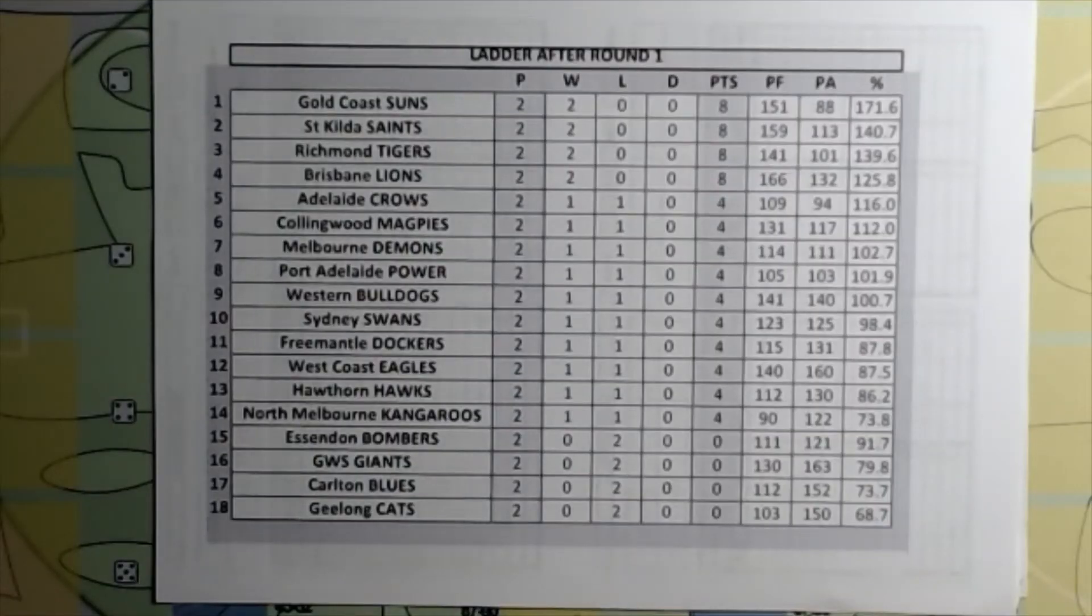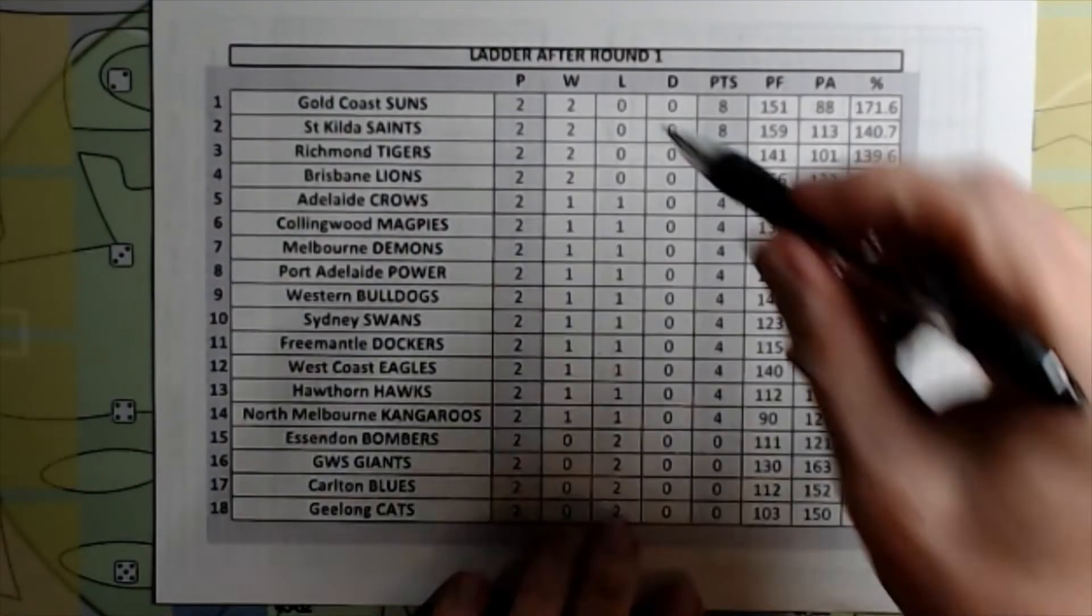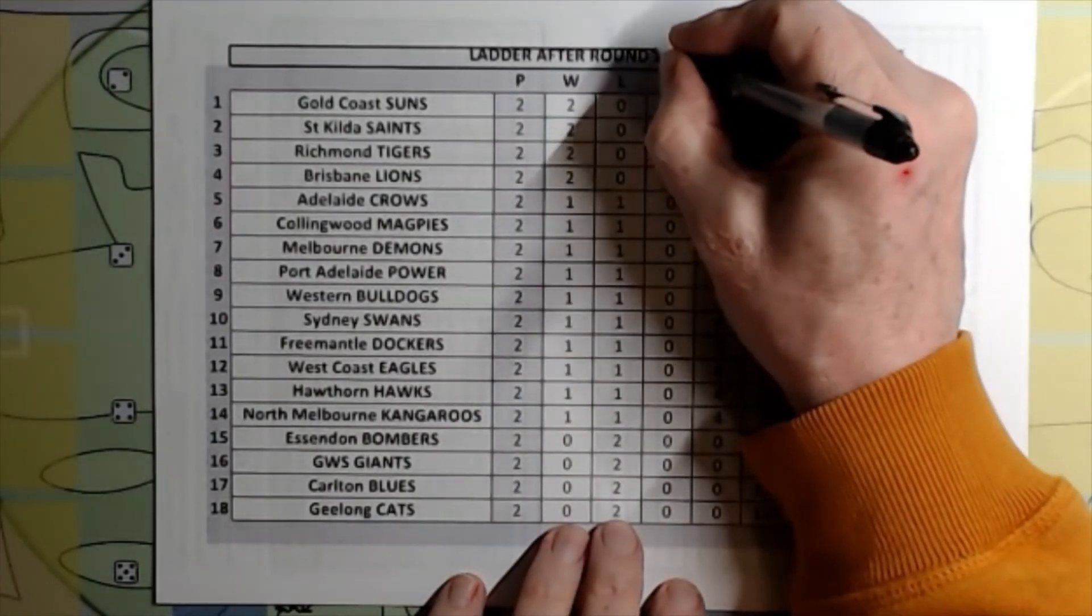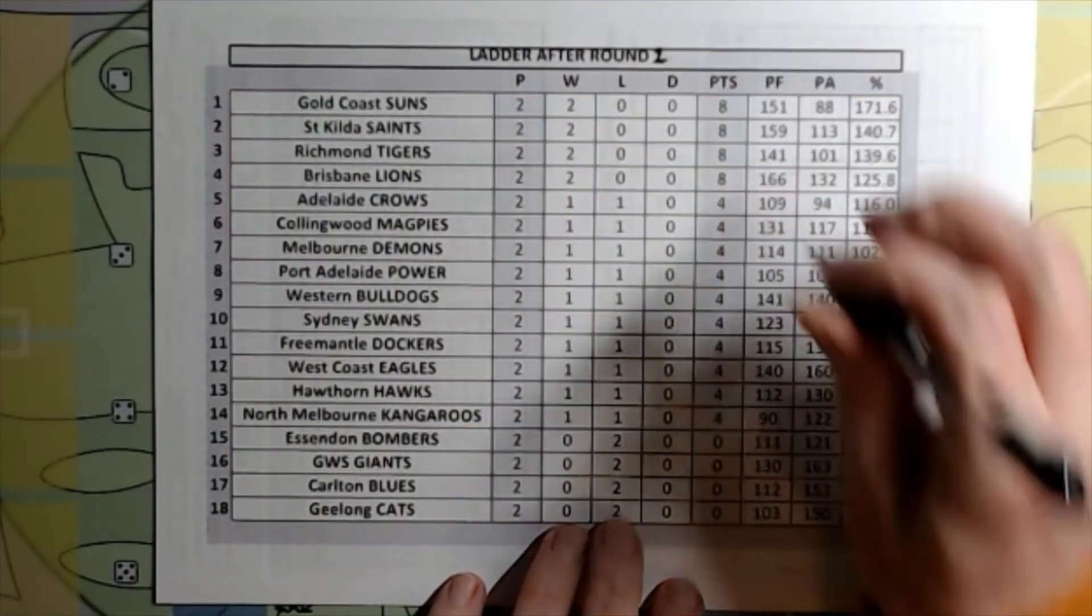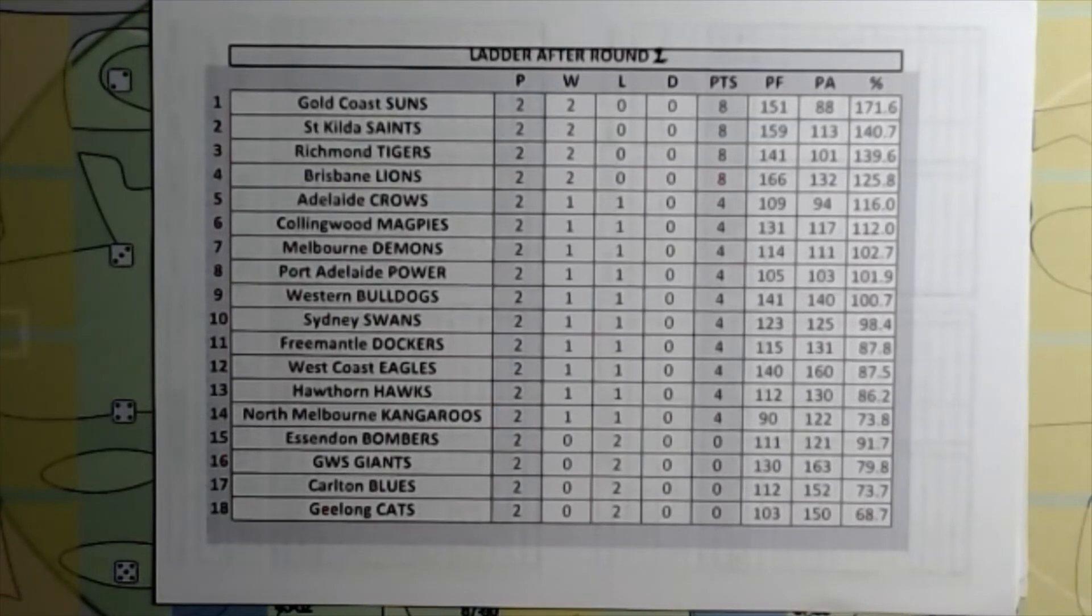So these are the ladder standings after round two. With Gold Coast, St Kilda, Richmond, and Brisbane all unbeaten on 2 and 0.